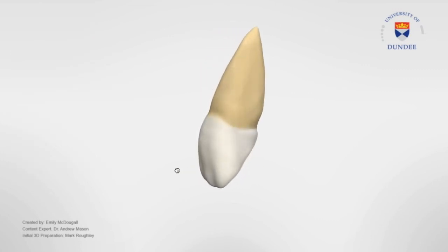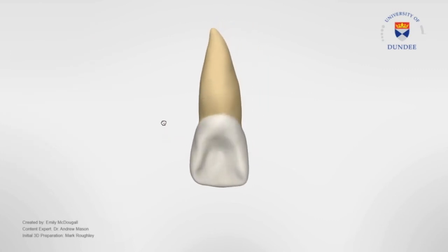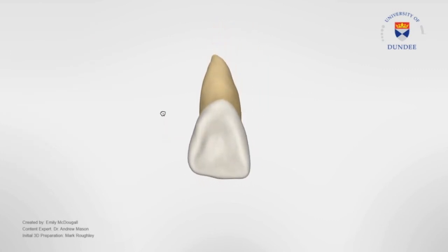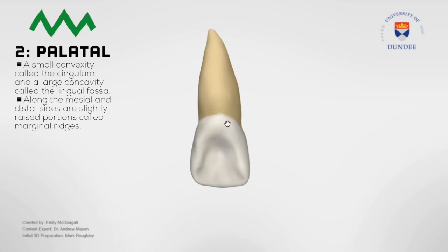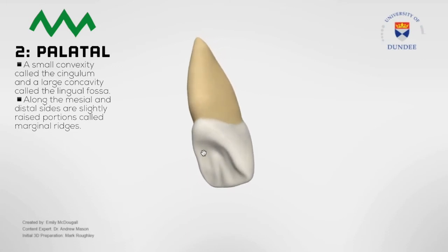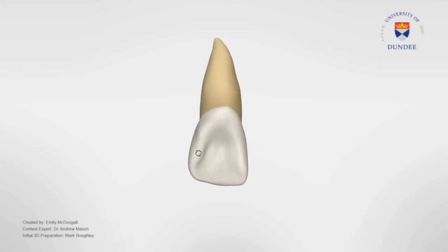The palatal viewing aspect considers the portion of the tooth visible from the side where the tongue would be. From this viewing aspect we can observe a small convexity called the cingulum and a large concavity called the lingual fossa. Along the mesial and distal sides are slightly raised portions which are called marginal ridges.